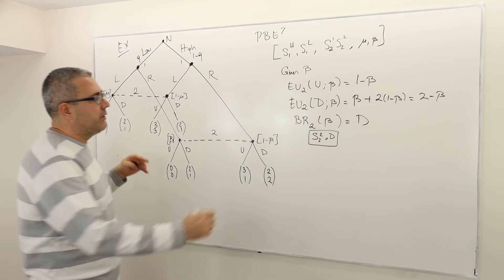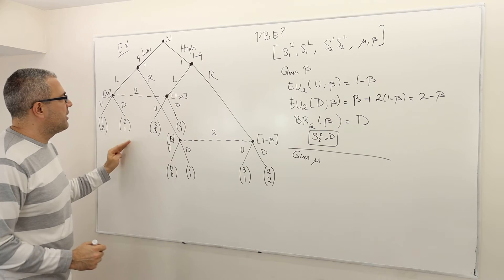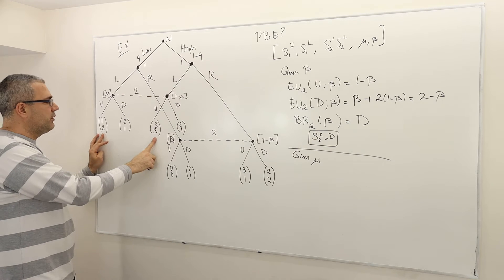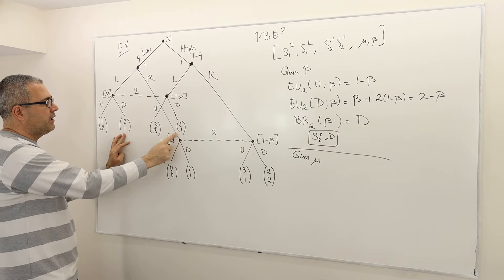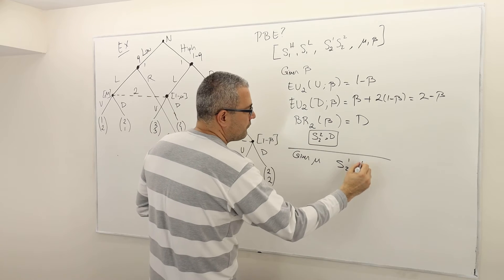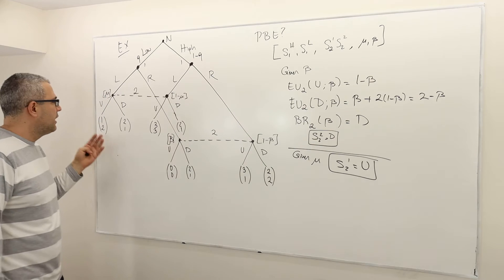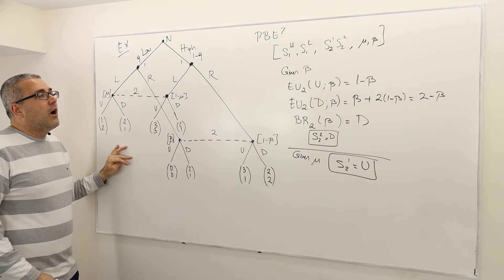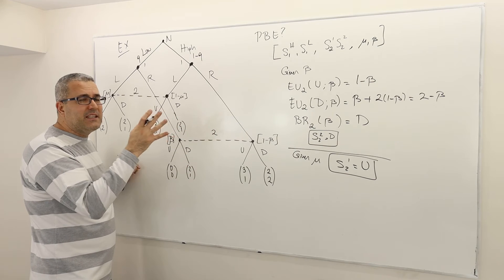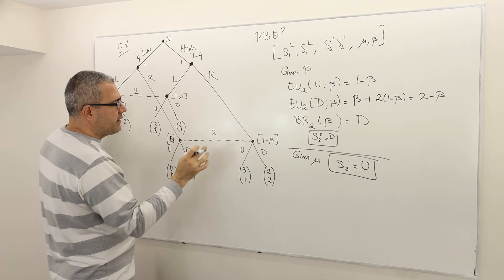Do exactly the same thing at the other info set. Given mu, what is the best response — what is the optimal strategy for player two? If you just look at the payoffs, playing U is always giving a higher payoff than playing D, and therefore S21 should be U. You can go through the long calculation and you'll see U has a higher expected payoff than D. So in any PBE, player two should be playing U here and D here.